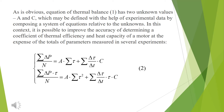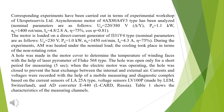As is obvious, the equation of thermal balance has two unknown values, A and C, which may be defined with the help of experimental data by composing a system of equations relative to the unknowns. It is possible to improve the accuracy of determining the coefficient of thermal efficiency and heat capacity of a motor by using total parameters measured across several experiments.